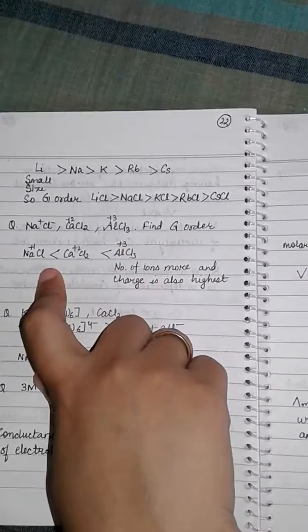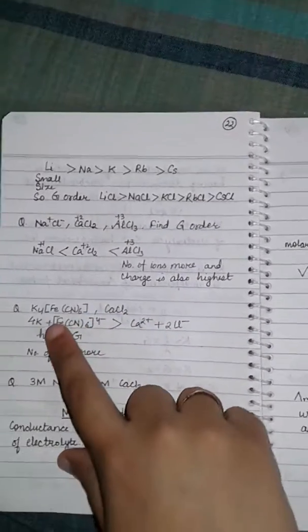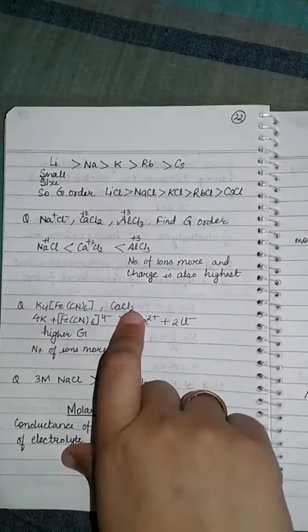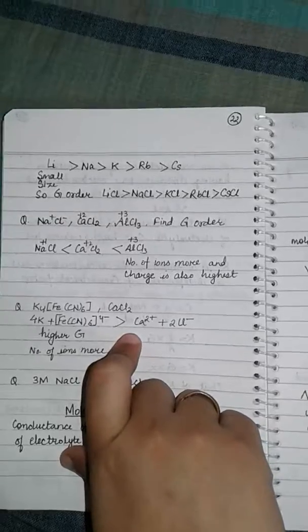Next question is K4[Fe(CN)6] and CaCl2. Compare the conductance order.